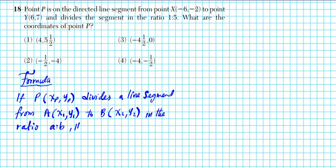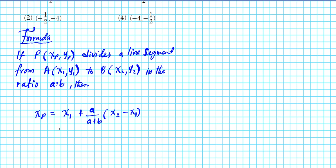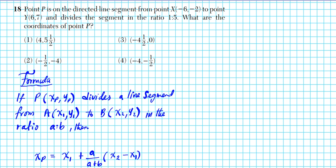...then the coordinates of that dividing point are: Xp = X1 + (a / (a+b)) × (X2 − X1), where X1 is the X-coordinate of the first point and a/(a+b) is the ratio of the distance, multiplied by the entire run. And Yp = Y1 + (a / (a+b)) × (Y2 − Y1), using the same ratio times the rise.